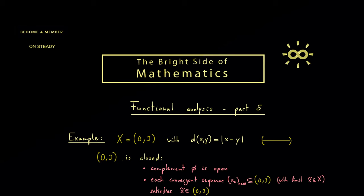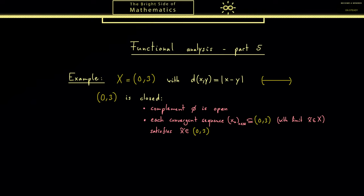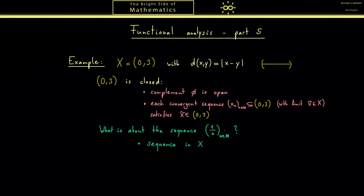Now a question that often arises with such an example is the following: What about the sequence 1 over n? Clearly this is a sequence in X. First member is 1, next one is 1 half and so on. You see all the members are positive so they lie in this interval.